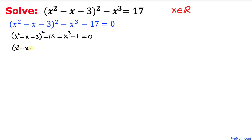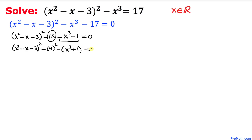In our next step, we can write x squared minus x minus 3 the same, and then this 16 could be written as 4 squared. Between these two terms, negative is in common, so we can write x cubed plus 1, equal to 0.